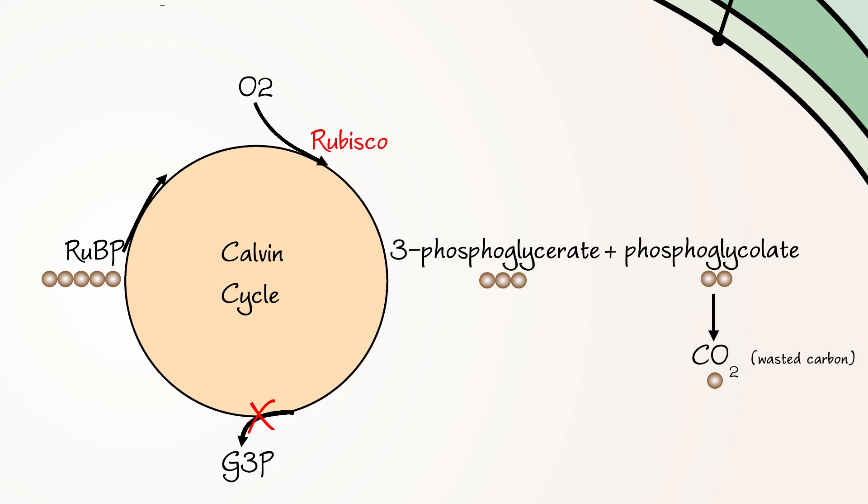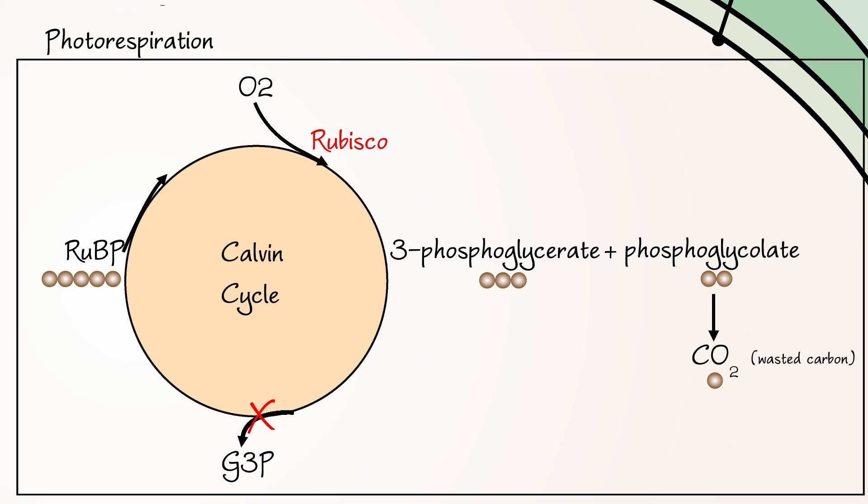This process is known as photorespiration. In summary, photorespiration wastes carbon, requires energy input, and does not result in the formation of glyceraldehyde 3-phosphate, a precursor of glucose.